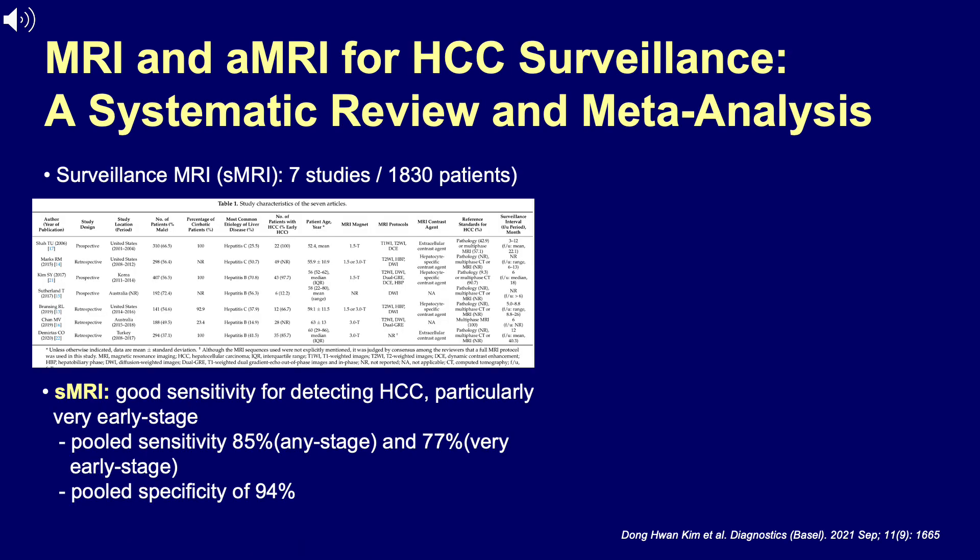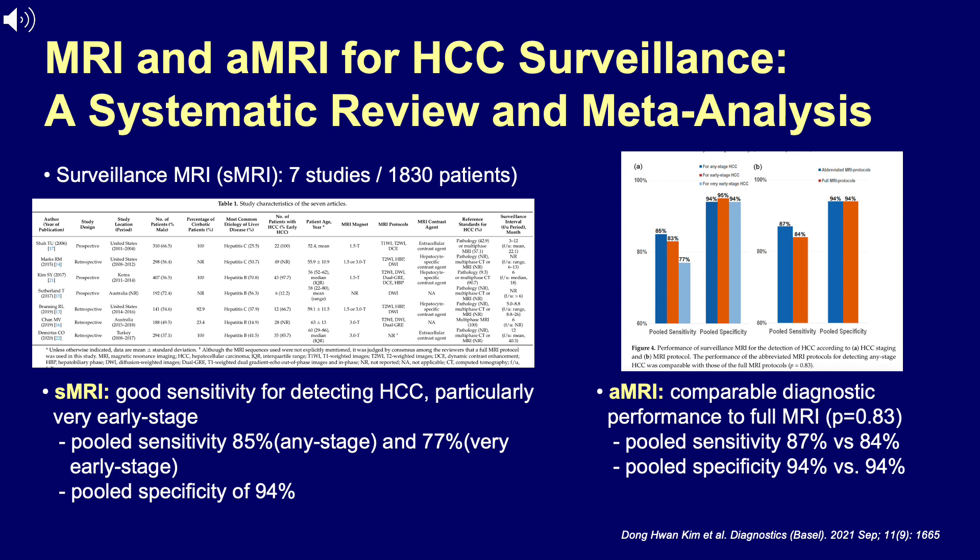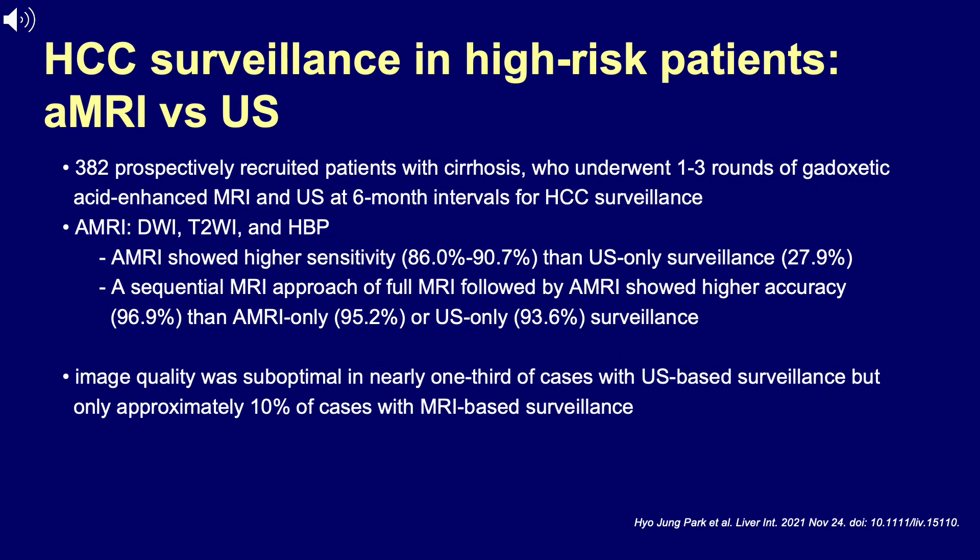In the context of HCC surveillance, a meta-analysis including more than 1,800 patients showed that surveillance MRI using different protocols has very good sensitivity and specificity for tumor detection, particularly for very early stage HCC. At subgroup analysis, abbreviated MRI had diagnostic performance comparable to full MRI, with a pooled sensitivity of 87 versus 84 percent and equal specificity of 94 percent. In a prospective study of high-risk patients undergoing HCC surveillance by gadoxetic acid enhanced MRI and ultrasound, abbreviated MRI had significantly higher sensitivity, and image quality was suboptimal in nearly one-third of ultrasound cases but only approximately 10 percent of MRI cases.